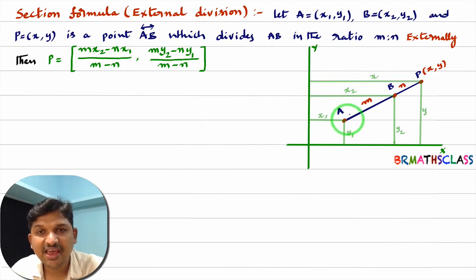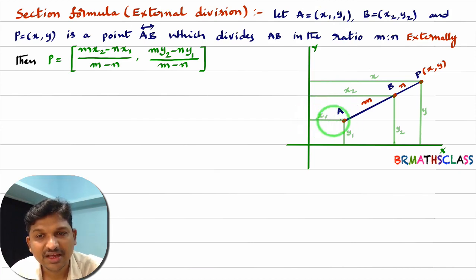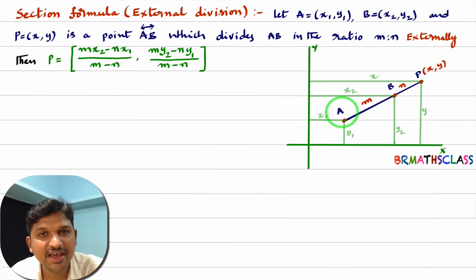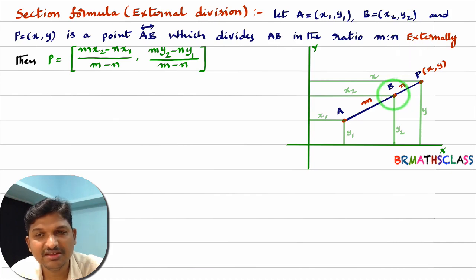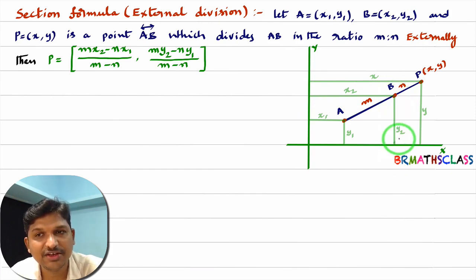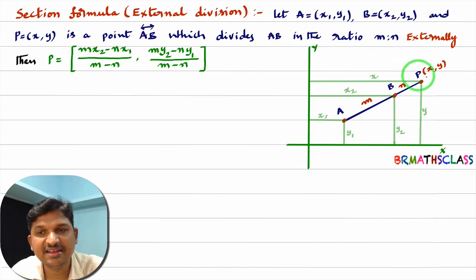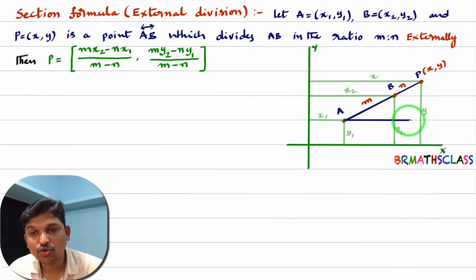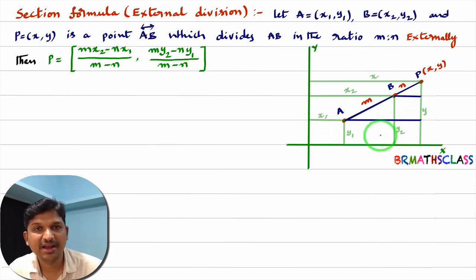You observe here — what is A? A is (x1, y1). As you considered A as (x1, y1), the perpendicular distance from point to y-axis is x1, this length is x1, and this length is y1. B is (x2, y2), so the perpendicular distance from point to y-axis is x2, and the perpendicular distance from point to x-axis is y2. Similarly, as you considered P as (x, y), this length is x and this length is y. Now I'll draw two lines parallel to the x-axis: AD and BC.